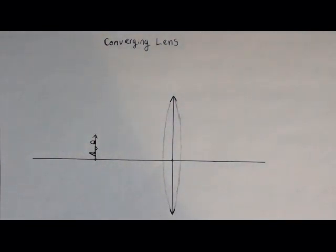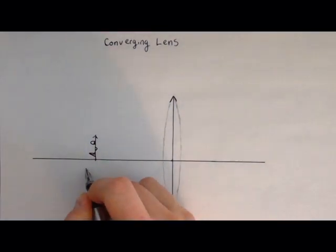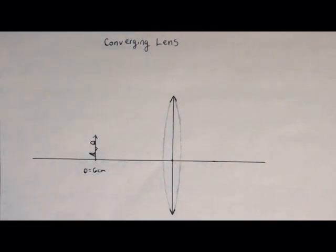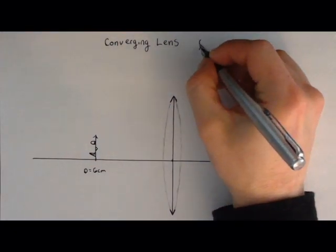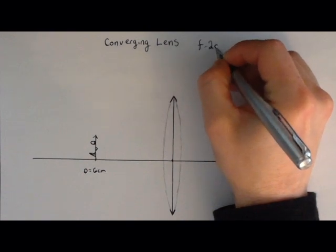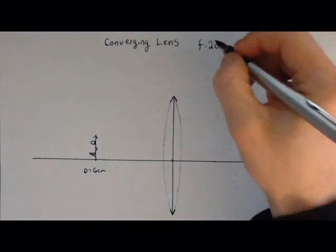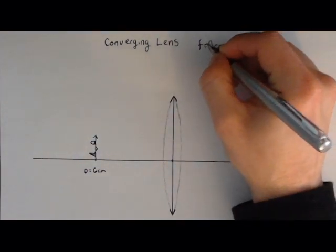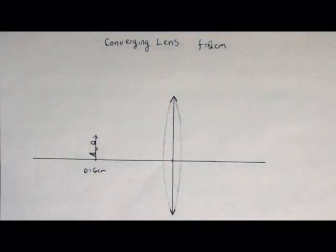We also need to know the focal lengths for our lens. So we've put our object here at six centimeters. For this particular lens, for example, let's put our focal length to be two centimeters. So let's do a two centimeter focal length.